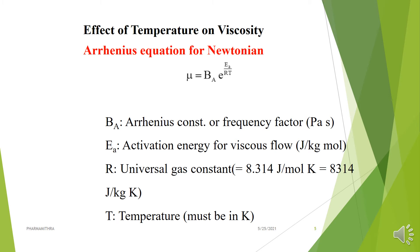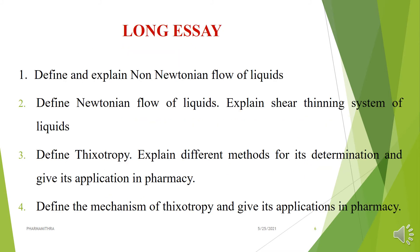The effect of temperature on viscosity was proposed by scientist Arrhenius. The equation is: μ = A·e^(Ea/RT), where A is the Arrhenius constant, Ea is the activation energy, R is the universal gas constant, and T is the temperature.